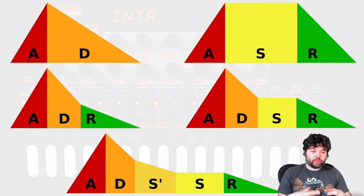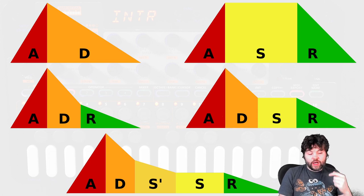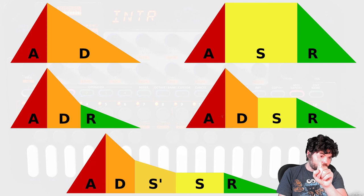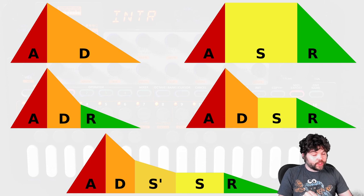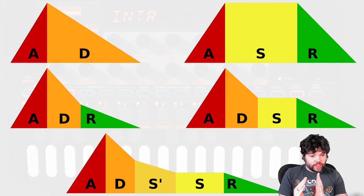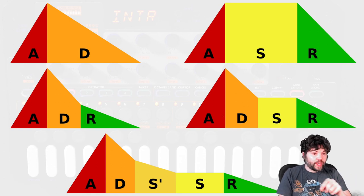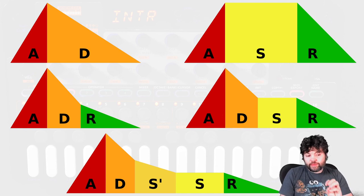The ADSR envelope is probably the most common, especially in subtractive synthesizers. It consists of an attack phase reaching maximum amplitude, a decay phase which decays to a sustain level, and the sustain level is maintained while the key is pressed. When the key is released it enters the release phase and decays to zero. Attack and decay have a time or gradient, sustain is a level, and release has a time or gradient.